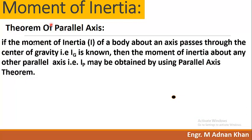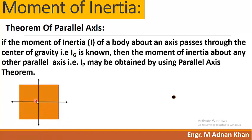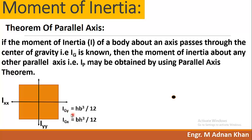The Theorem of Parallel Axis states that if the moment of inertia IG of a body about an axis passing through the center of gravity is known — as we have a rectangle here where the reference axes pass through the centroid of the figure — that value IG is predefined. If the reference axes pass through the centroid, the moment of inertia of the figure will be equal to a known value.